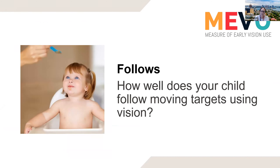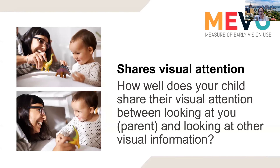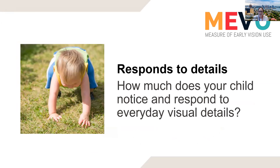'Follows moving targets' includes the ability to follow different types of moving targets at some different speeds and directions — examples include a person or pet walking around, the spoon during mealtime, or a rolling ball. 'Searches for and finds things using vision' is considered good when done in situations with lots of visual clutter, such as looking for a preferred toy amongst other options. 'Shares visual attention' is about how well a child shares attention between looking at the parent and other visual information — for example, looking from a toy to the parent and back. 'Responds to details' rates how much a child notices everyday visual details such as facial features, small items, specific parts of a toy or picture, obstacles on the ground, and non-verbal cues such as pointing. 'Time to respond' is about how quickly a child responds to visual information, and the last item, 'overall use of vision,' is an overall rating of how effectively vision is used in everyday activities.